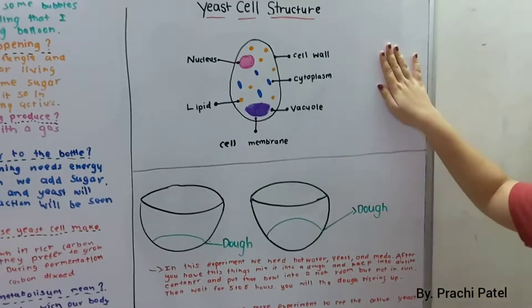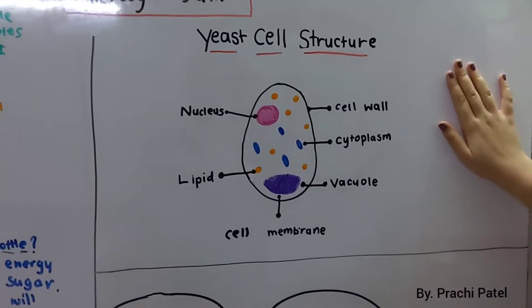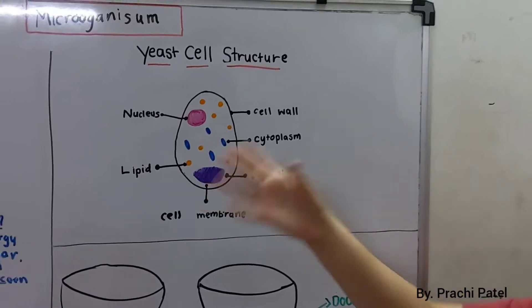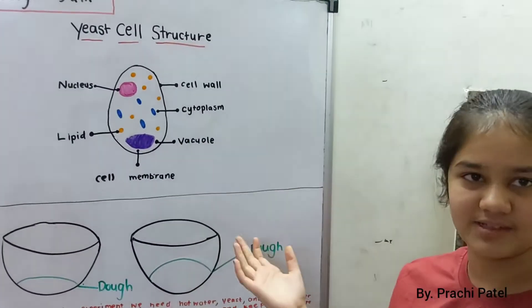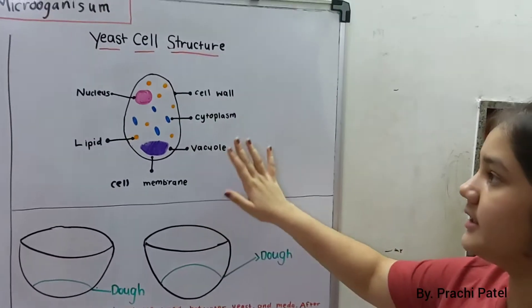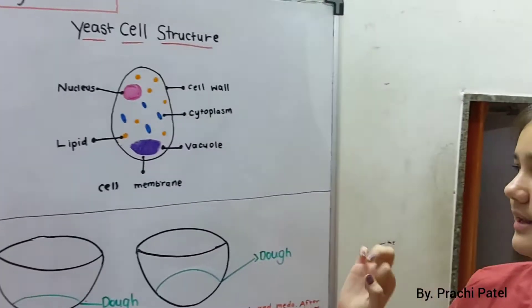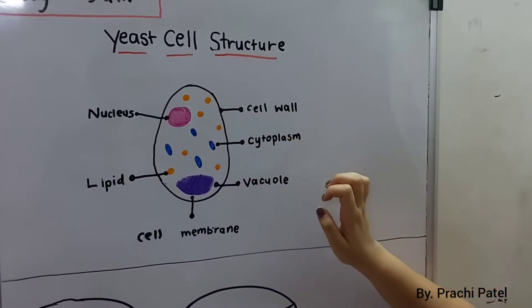Now, here is our yeast cell structure. It is basically the same names, same parts as our body cells, animal cells and plant cells. It is formed with a cell. This is the cell. This is the cell wall which each and every cell has.